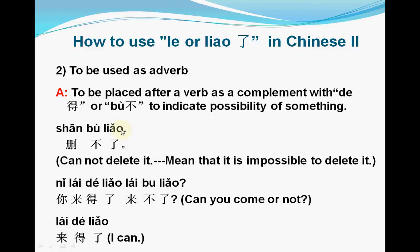了 is also used as an adverb. The first usage is to be placed after a verb as a complement with 得 or 不 to indicate the possibility of something. For example, 删不了 (shān bù liǎo): 删 means 'delete', 不了 means 'it is impossible' — so it means 'cannot delete' or 'it is impossible to delete it'. Another example: 你来得了，来不了? — meaning 'Is it possible for you to come or not?' The answer: 来得了 means 'it is possible I can come'.